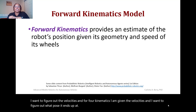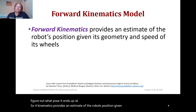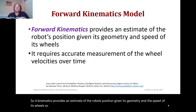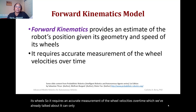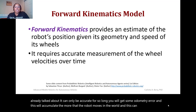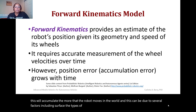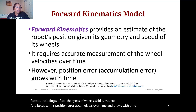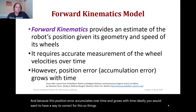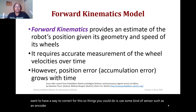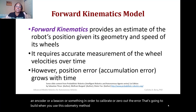Forward kinematics provides an estimate of the robot's position given its geometry and the speed of its wheels. It requires accurate measurement of wheel velocities over time, but it can only be accurate for so long — odometry error will accumulate the more the robot moves, due to factors including surface type, wheel type, and skid turns. Ideally you would use a sensor such as an encoder or a beacon to calibrate or zero out the error that builds up when using the odometry method to estimate the robot's position.